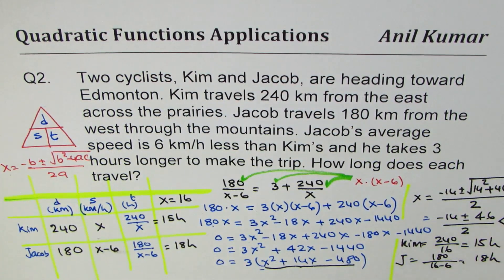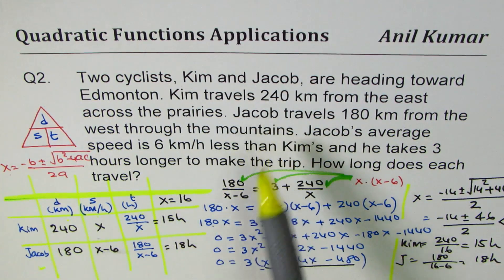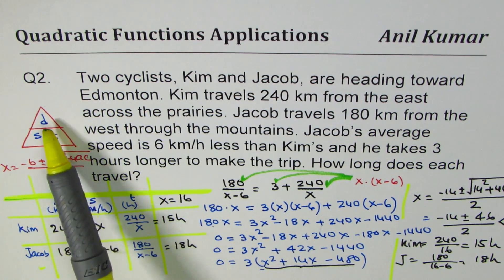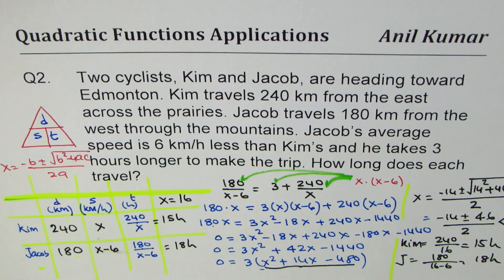I hope that helps. Whenever you're given a word problem, try to make a table relating distance, speed, and time for different events. From the statements, fill out whatever is given, and use the formula — distance equals speed times time, or time equals distance divided by speed — to solve, as we've done in this example. I'm Anil Kumar. You can like my videos, share with your friends, and feel free to post questions. Thank you, and all the best.